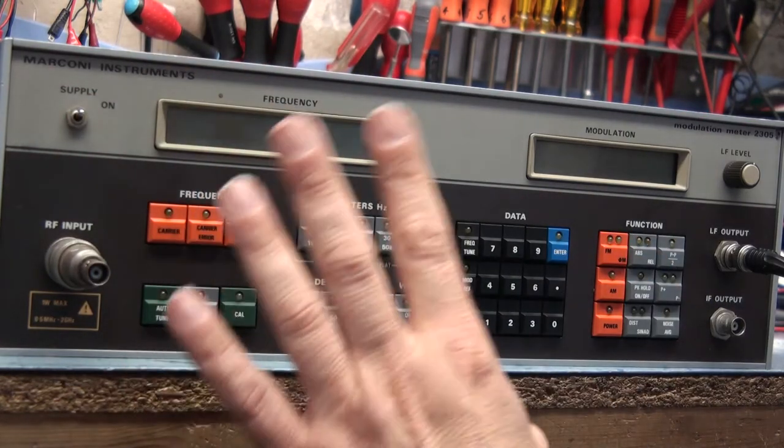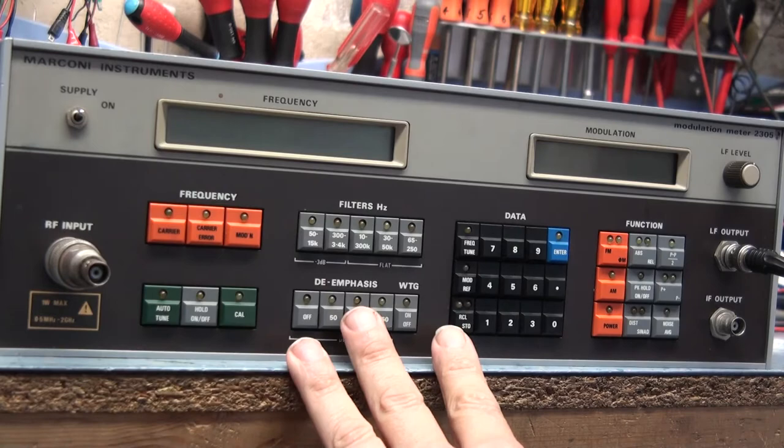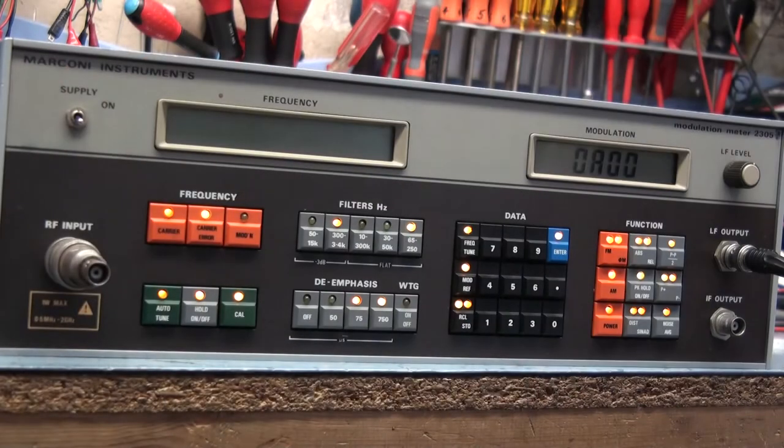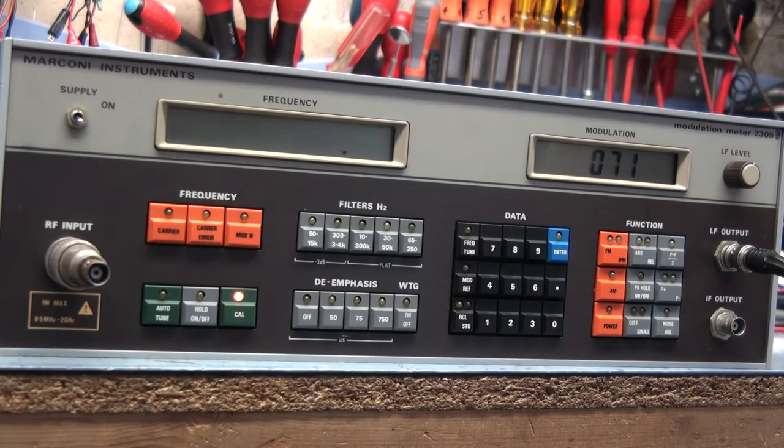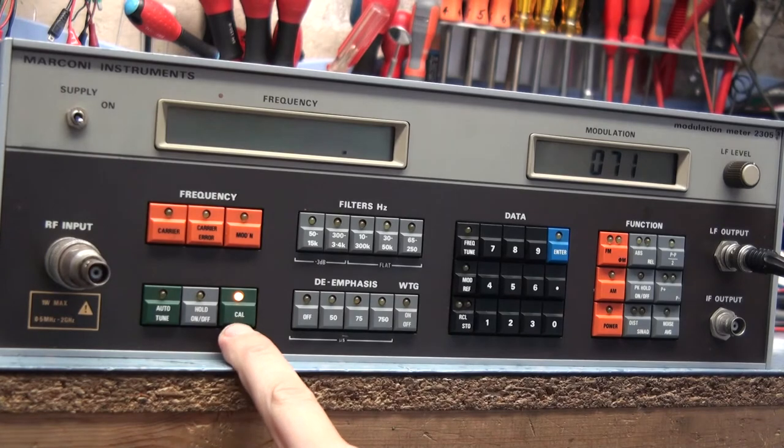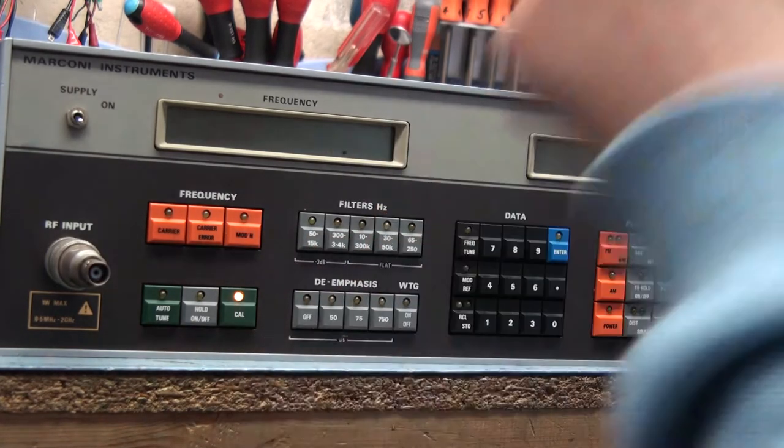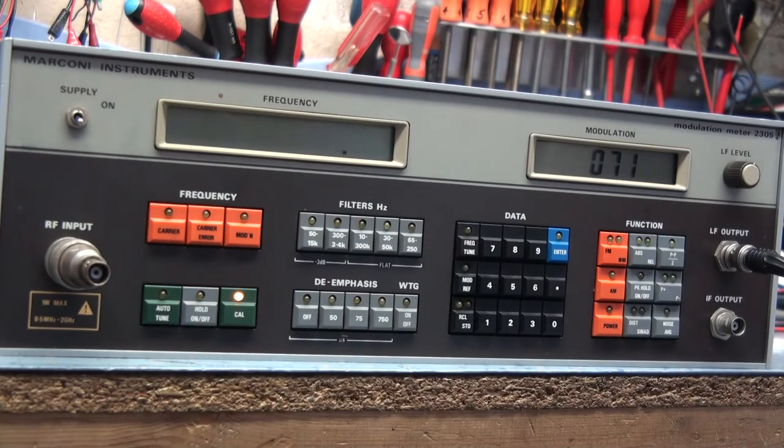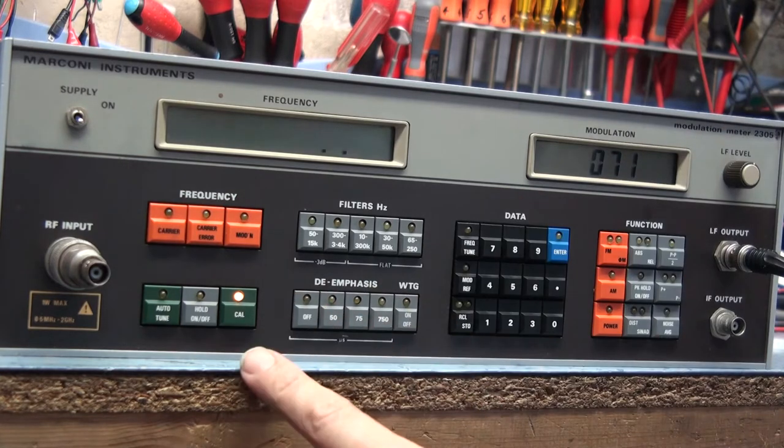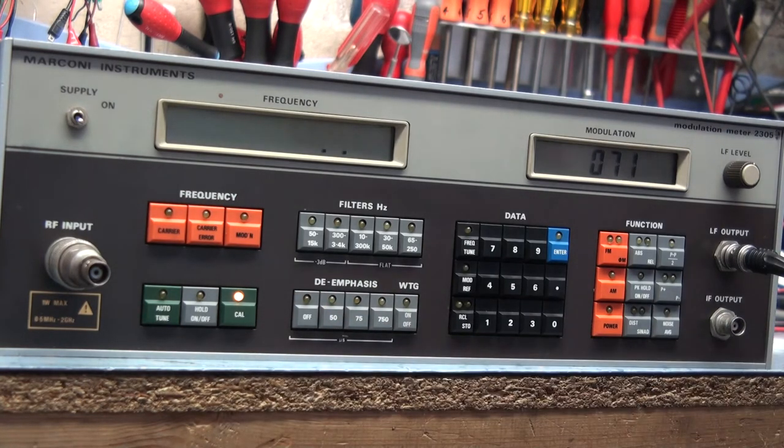The problem with this one is it's definitely got a fault with it. It was sold as spares or repair. When you power it up it defaults to cal. Now I think that's normal. The other unit I have doesn't do that. And what it's doing at the moment is running through a calibration routine just to make sure it's okay, which it isn't, and it should come up with a couple of error messages.